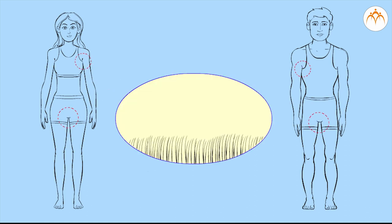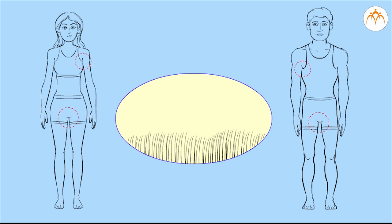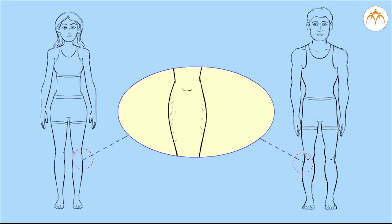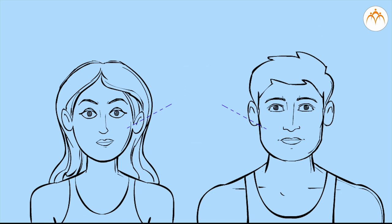Hair in armpits. Hair in the genital area, or pubic hair. Hair on hands and legs. The skin may become oily and may have pimples.